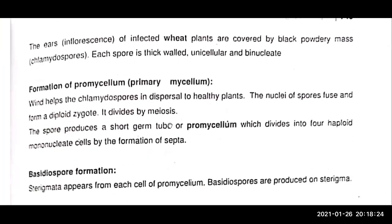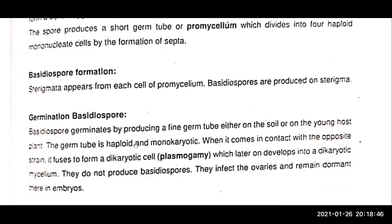Formation of the pro-mycelium, also called the pro-primary mycelium. Wind helps in chlamydospore dispersal. The nucleus of the spores fuse and form a diploid structure by meiosis. The spore produces a short germ tube or pro-mycelium, which divides into four haploid mononuclear cells by formation of septa. Basidiospores form on sterigmata from the cells of the pro-mycelium.